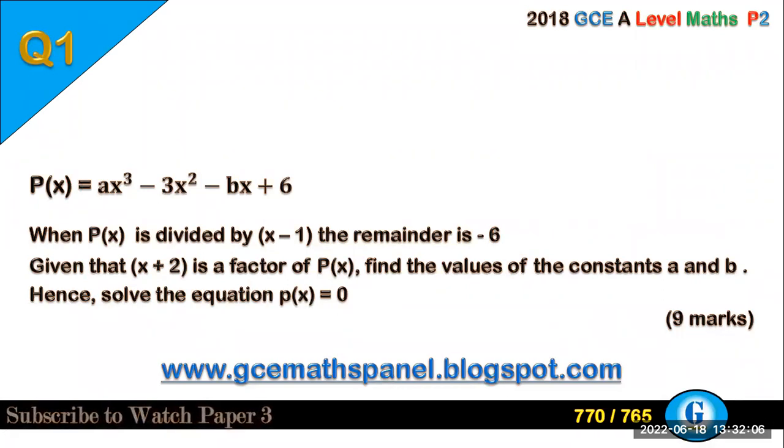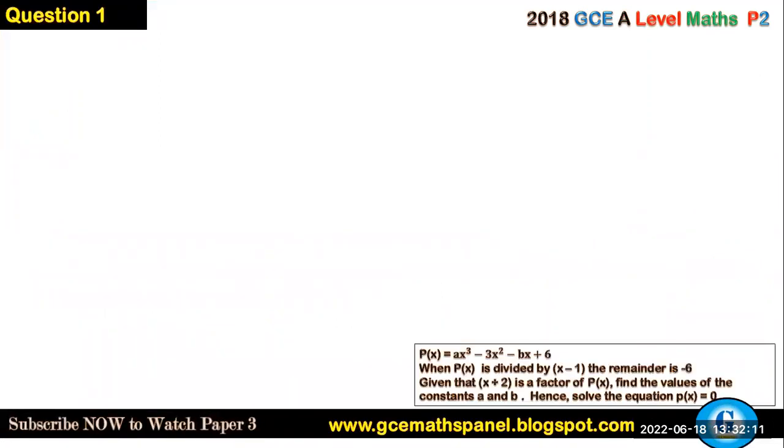So in this particular question, we are targeting a polynomial function. With this polynomial function we are being told that (x - 1) is not a factor because it leaves a remainder of minus 6, while (x + 2) is a factor because its remainder is going to be 0. From these two ideas we can use the remainder and the factor theorem respectively to find the values of the constants a and b, and hence we can solve the equation P(x) = 0.